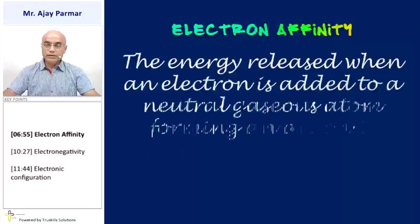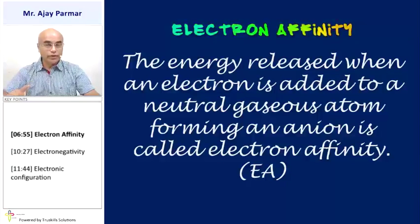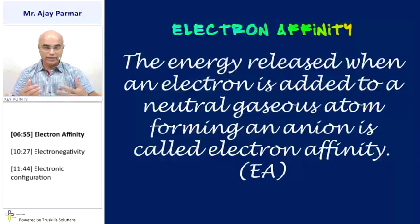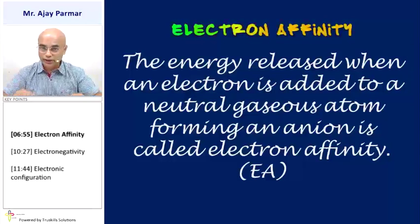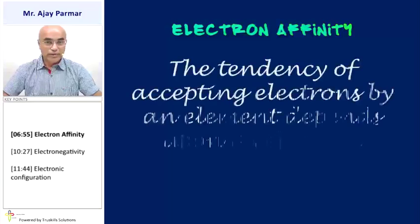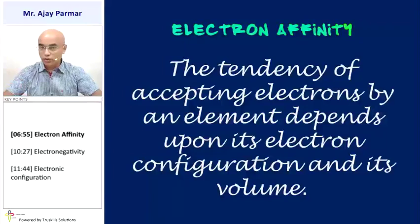Electron affinity. The energy released when an electron is added to a neutral gaseous atom forming an anion is called electron affinity. Some elements accept electrons. When an atom has to lose an electron, it requires energy, but when it gains an electron, it gives out energy. The energy which is given out during the inclusion of that electron is referred to as electron affinity. It depends on the electronic configuration and also on the volume of the given atom.